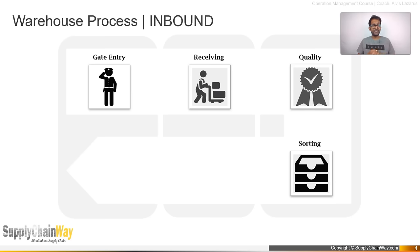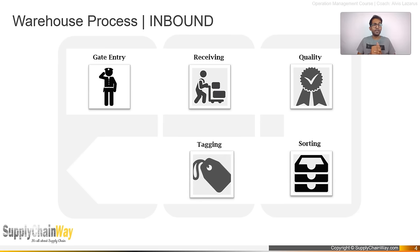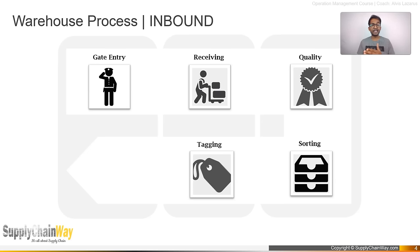As a standard process: after gate entry, you do receiving, quality check, then sort the products according to where they should go, and then tagging. Tagging means putting labels on the product — these labels indicate which storage location the product should go to. To determine upfront where a product should go, you need a good WMS with 'slotting' capability, which can identify empty locations that suit the product type.